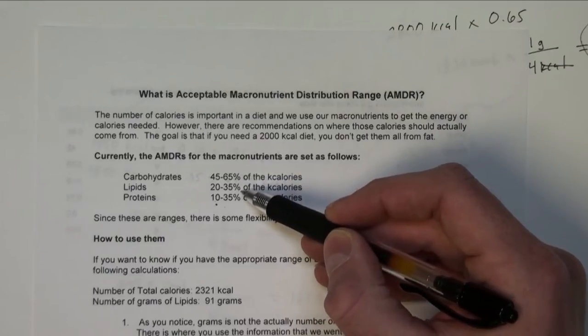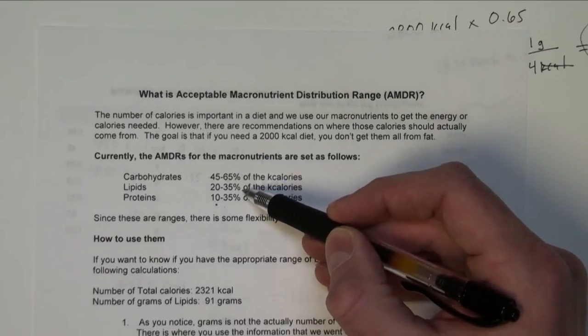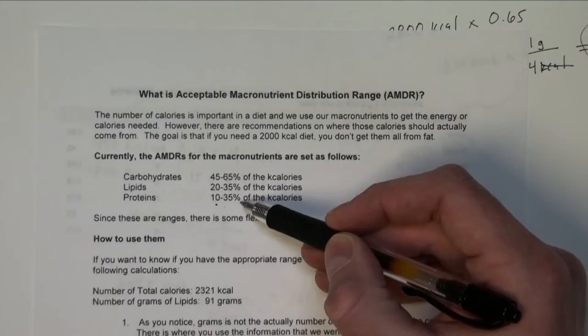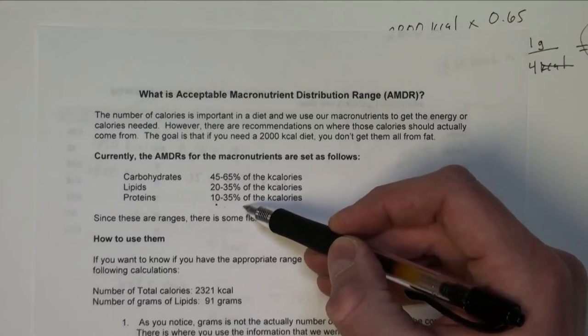20 to 35 percent of those calories should be coming from lipids, and then 10 to 35 percent of your total calories should be coming from proteins.